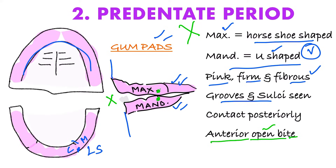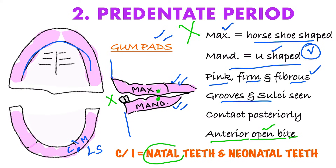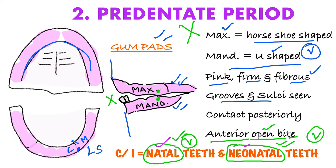In the anterior region, the gum pads do not contact, so we have an anterior open bite. As a clinical implication, sometimes teeth may be present within the gum pads since birth — these are called natal teeth. If they arise within the first month of life, they are called neonatal teeth. Another important viva question: the most common natal and neonatal teeth are the mandibular incisors.